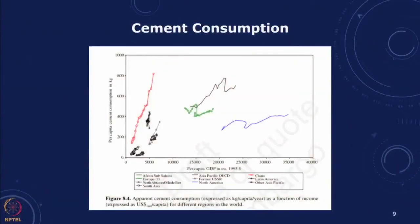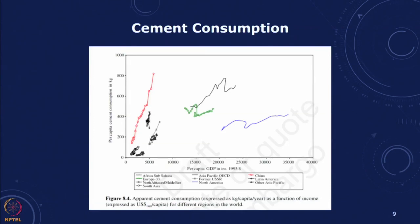A similar thing can be seen for cement — you can look at the different levels at which developing countries are growing. In these cases it is more or less saturating, at different levels. Overall, the global demand normalized shows an overall growth trend.